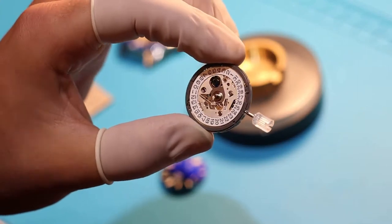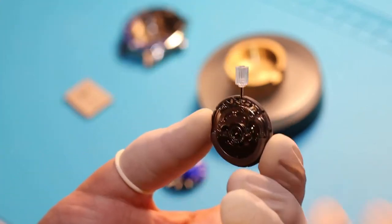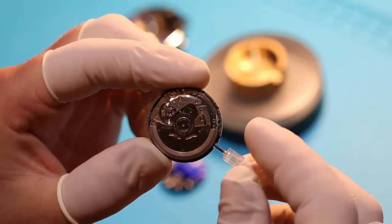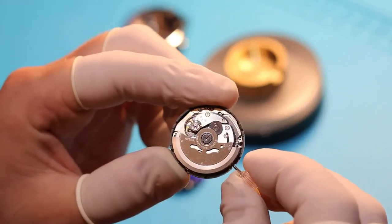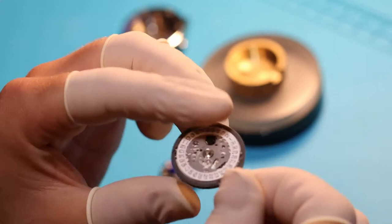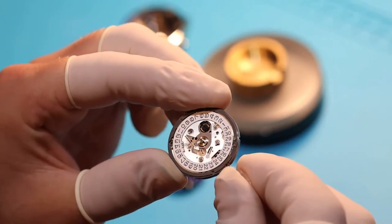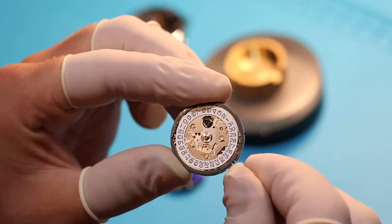This build is going to run off the venerable Seiko NH35 movement, and it goes without saying, for the price that you can get these, they can be made very accurate, reliable, and for this reason, almost all of my builds are NH series movements, as well as almost all other modders and many micro brand watches as well.